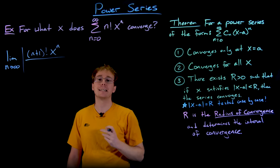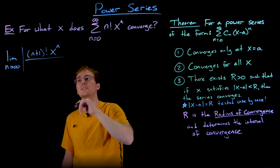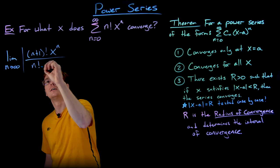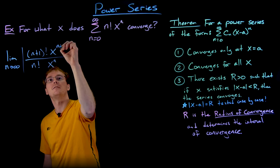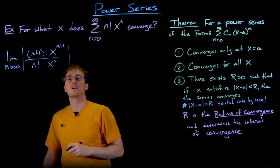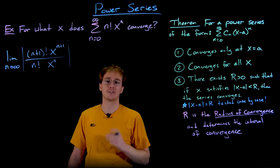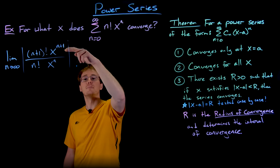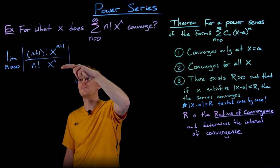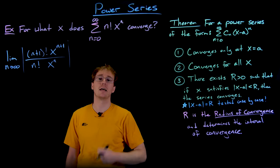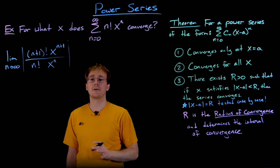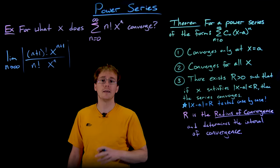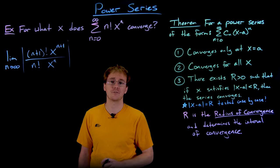We divide that by the nth term, which is n factorial times x to the power of n. So in the numerator we have our (n+1)th term and in the denominator our nth term. We need to figure out: are there any x values for which this ratio will become strictly less than 1, and if so, what are those x values?